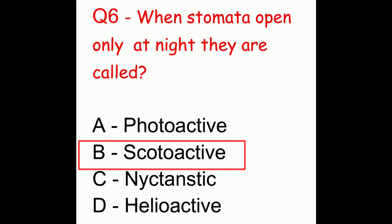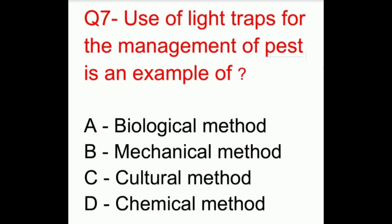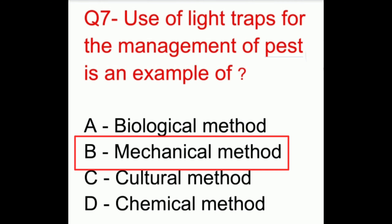Question 7. Use of light traps for the management of pests is an example of? The options are biological method, mechanical method, cultural method, or chemical method. The correct answer is mechanical method.